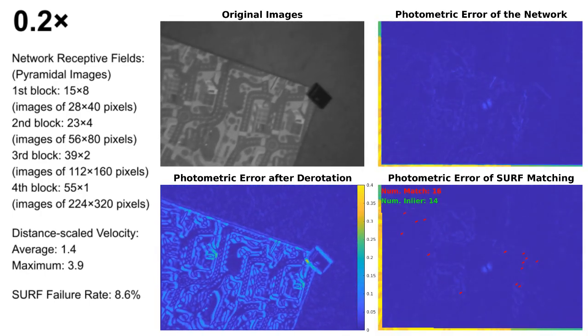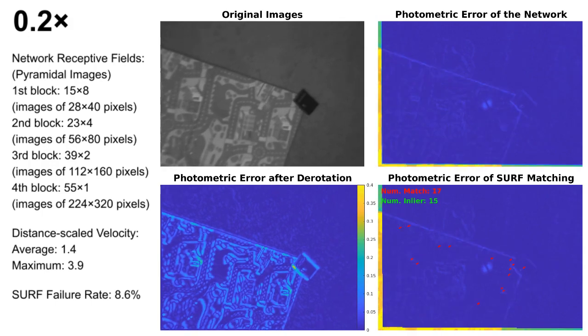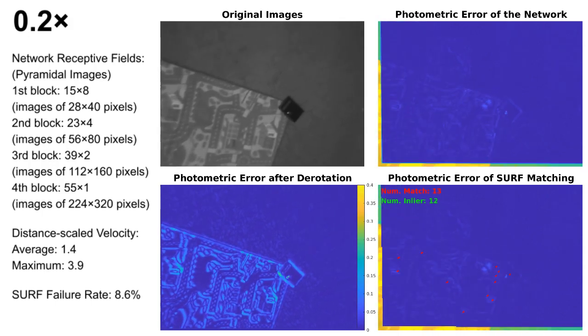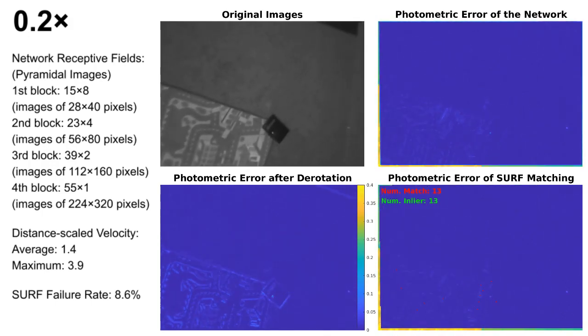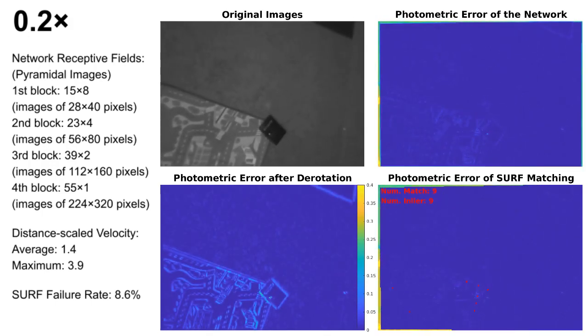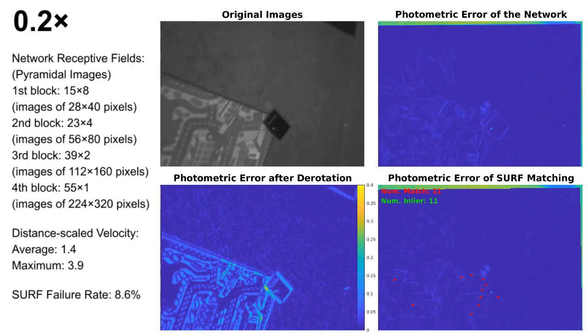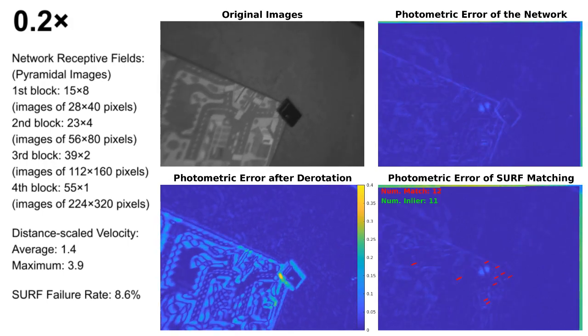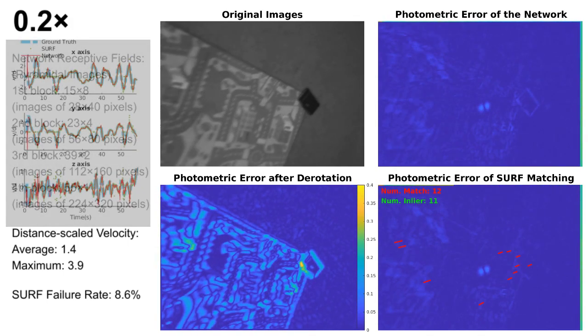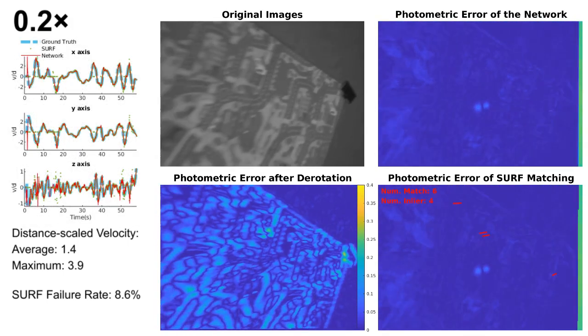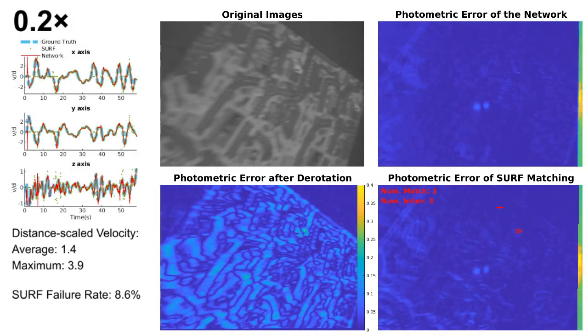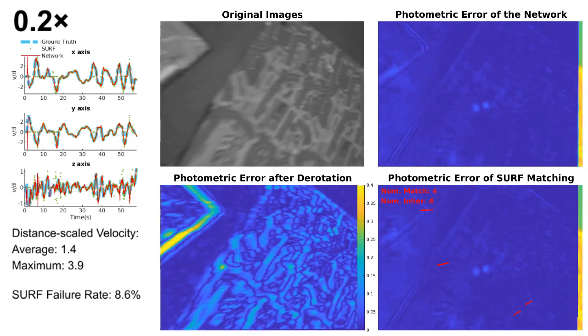When the flight speed increases, the motion blur grows and fewer feature points can be detected. For 8.6% of image pairs in this sequence, the SURF feature has less than two in-lier matchings.